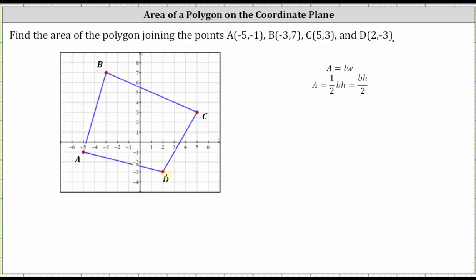One approach might be to cut the quadrilateral into two triangles — for example, by sketching the segment AC — then determining the area of the two triangles and summing the areas to find the area of the quadrilateral. However, this would be challenging because we'd have to find the length of the base and the height of the triangles. Remember, the area of a triangle is equal to one-half base times height.